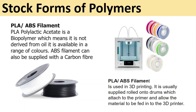PLA (polylactic acid) is a biopolymer, meaning it doesn't come from oil, and is available in a range of colors. ABS filament can also be supplied with carbon fiber reinforcement. PLA or ABS filament is used in 3D printing and is normally supplied rolled onto drums which attach to the printer, allowing the material to be fed into the 3D printer.